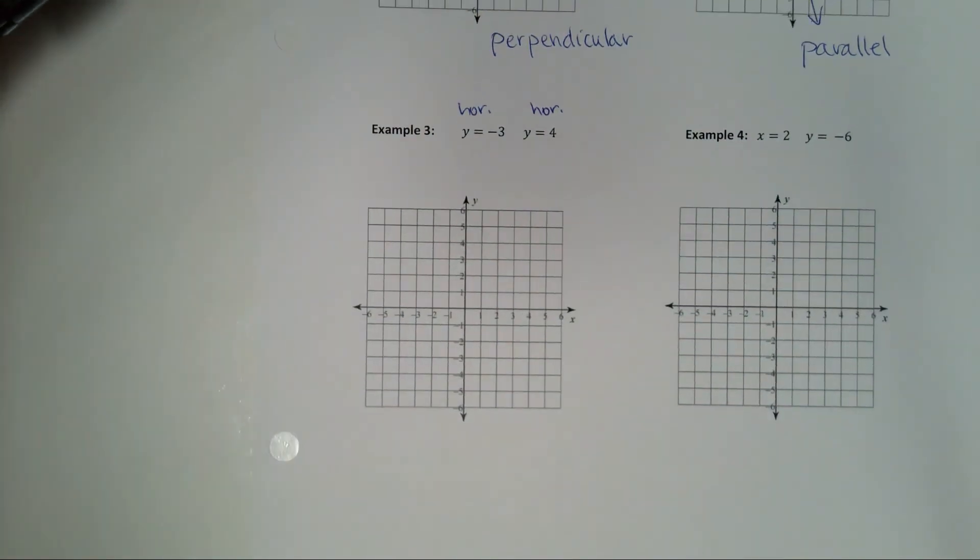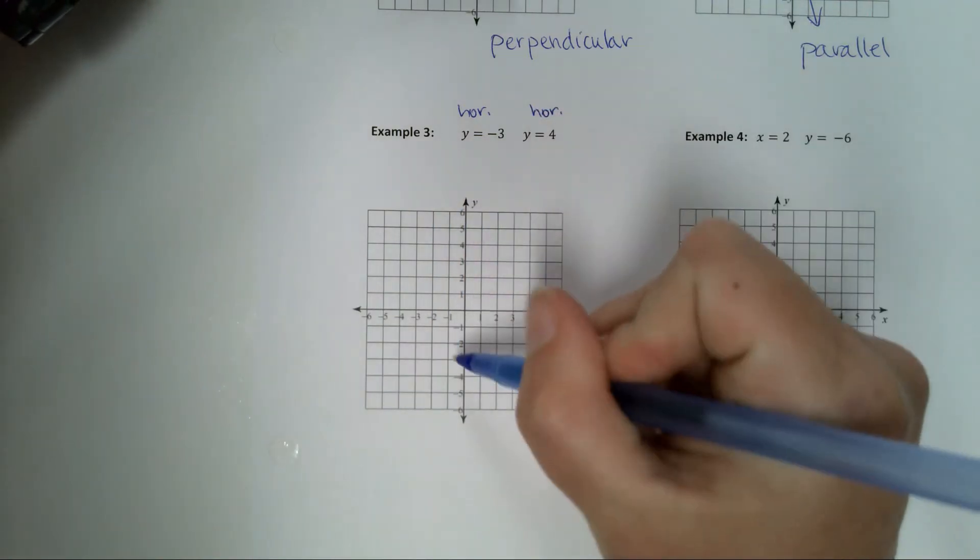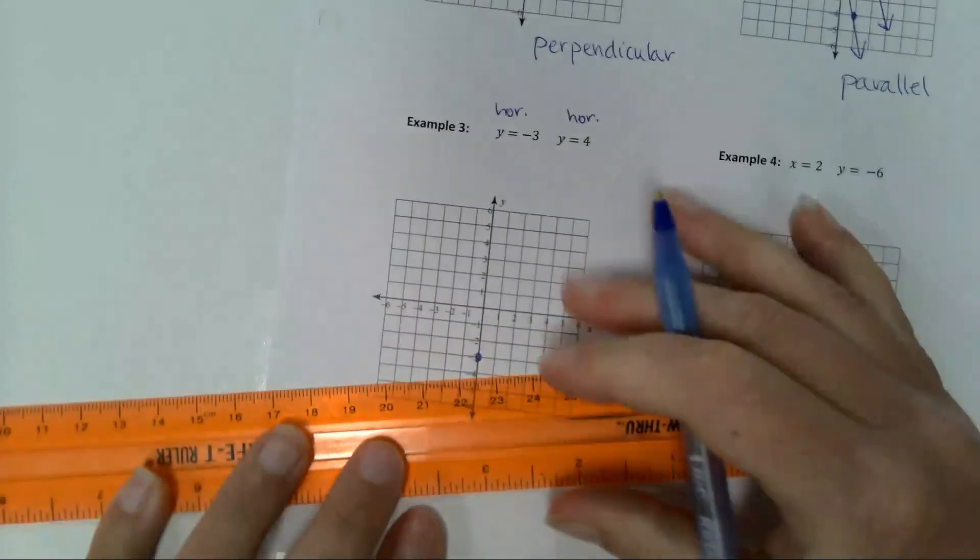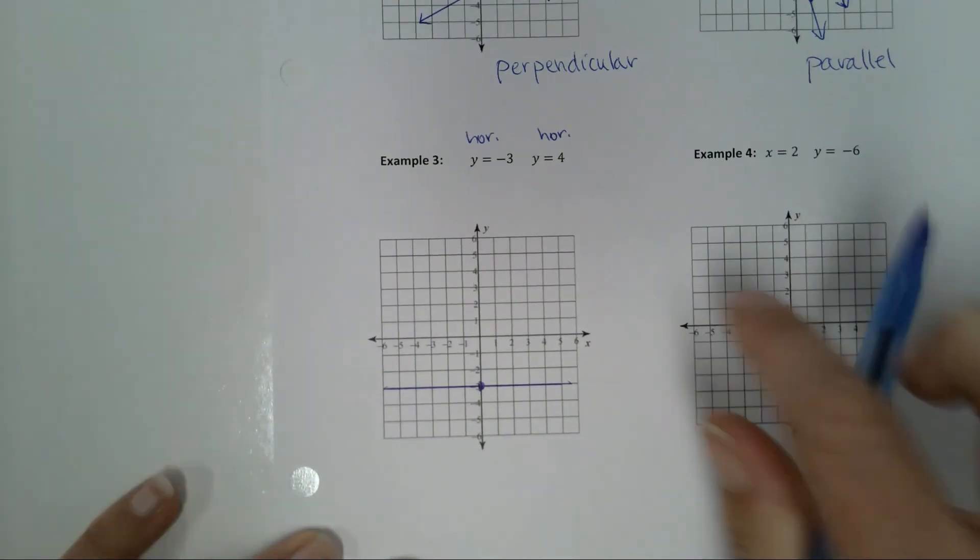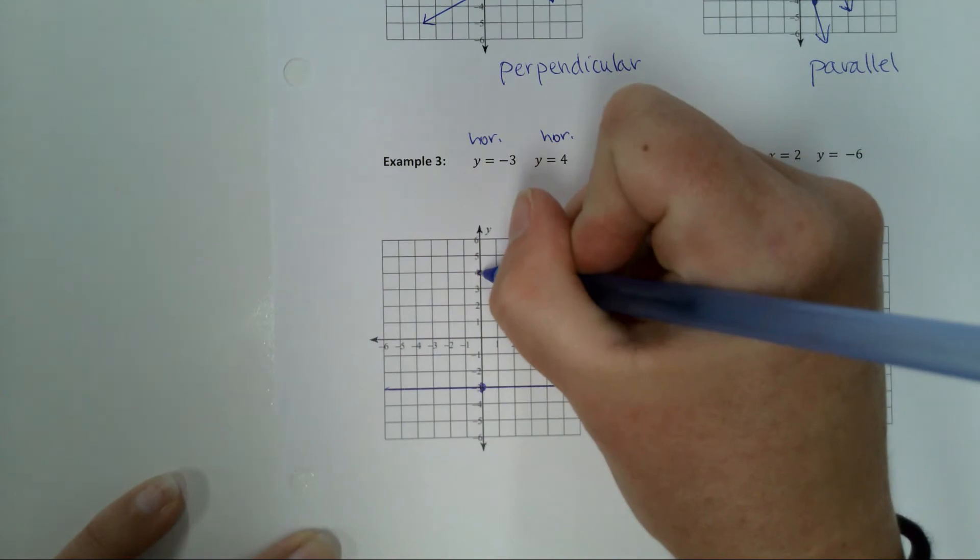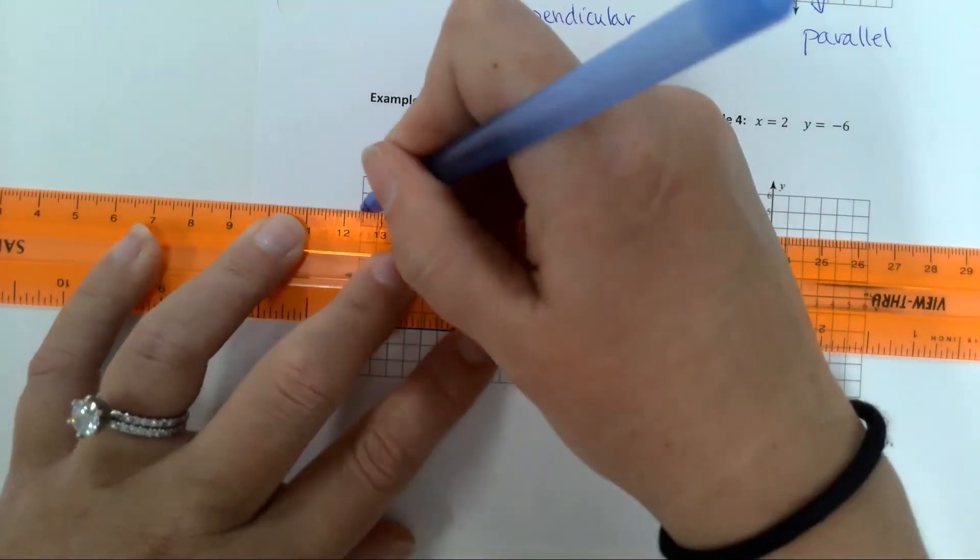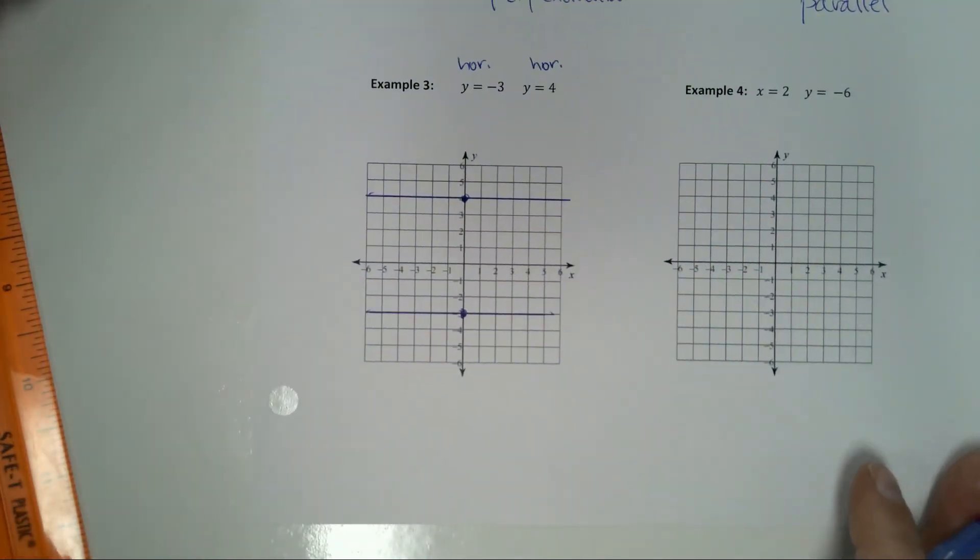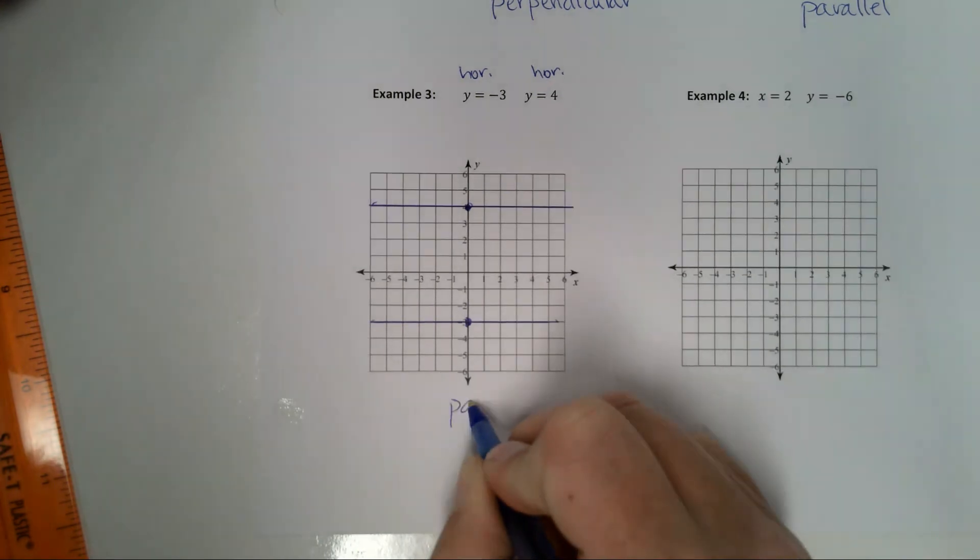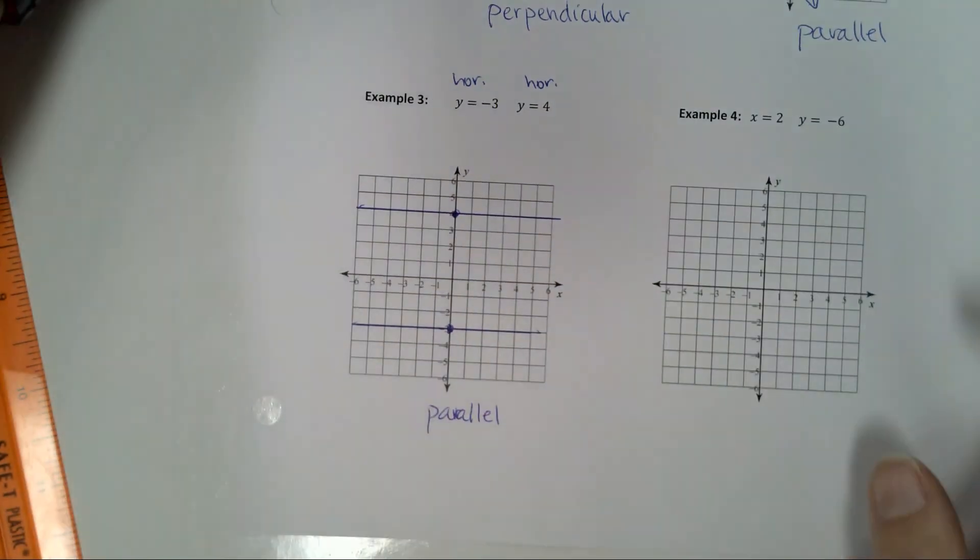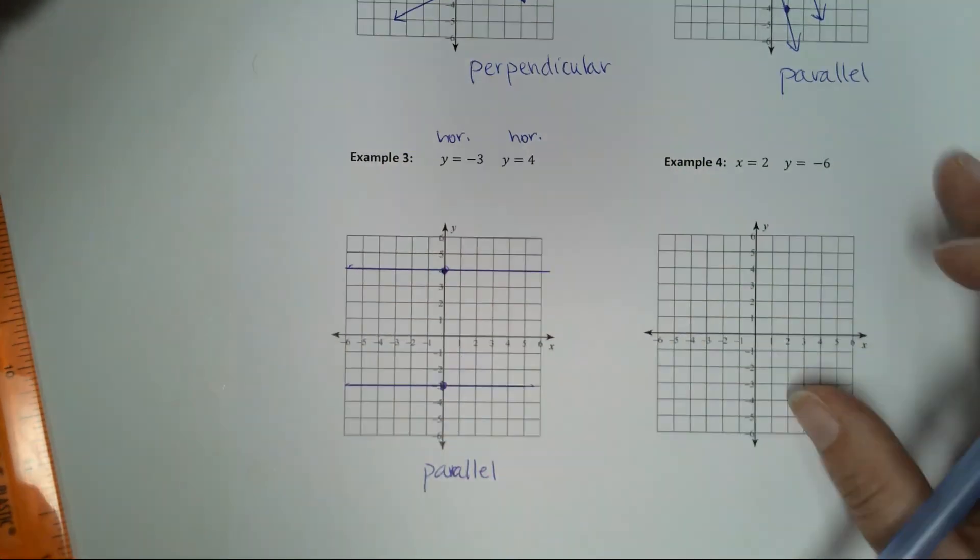When you're graphing horizontal lines, you go to your y-axis, put a point at negative 3. So, y-axis, negative 3. Draw a horizontal line. Boom, that's the first one. Second one, go to my y-axis, put a point at 4. Draw a horizontal line. And voila! What kind of lines are these? They're both horizontal, so they are what? These are parallel lines. Remember, we did talk about this yesterday. Anytime you have two horizontal lines, they are always going to be parallel.